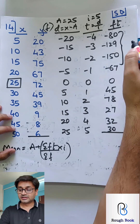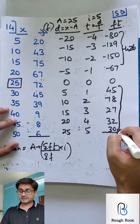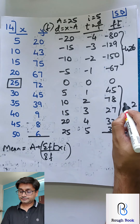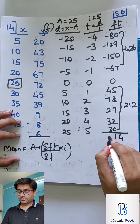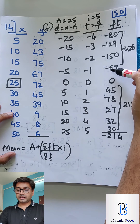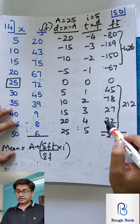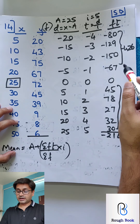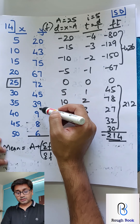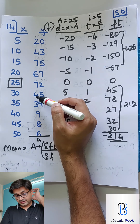Adding the negative FT values: totals give negative 426. Adding the positive FT values: totals give 212. The difference is negative 214 as summation FT. Now adding all frequencies: 5, 3, 8, 7, 15, 20, 30, 40, 54 — total is 384. So substituting: mean equals 25 plus (negative 214 divided by 384) multiplied by 5.